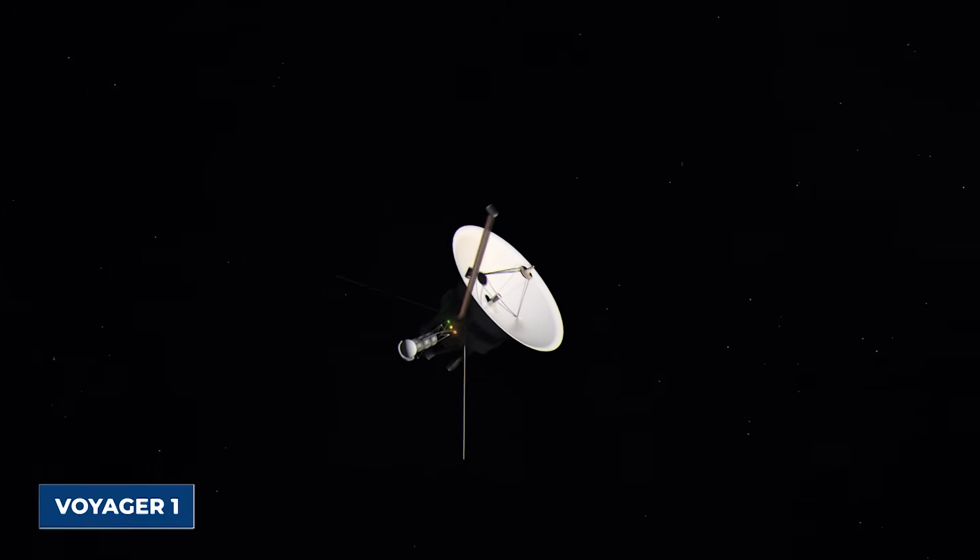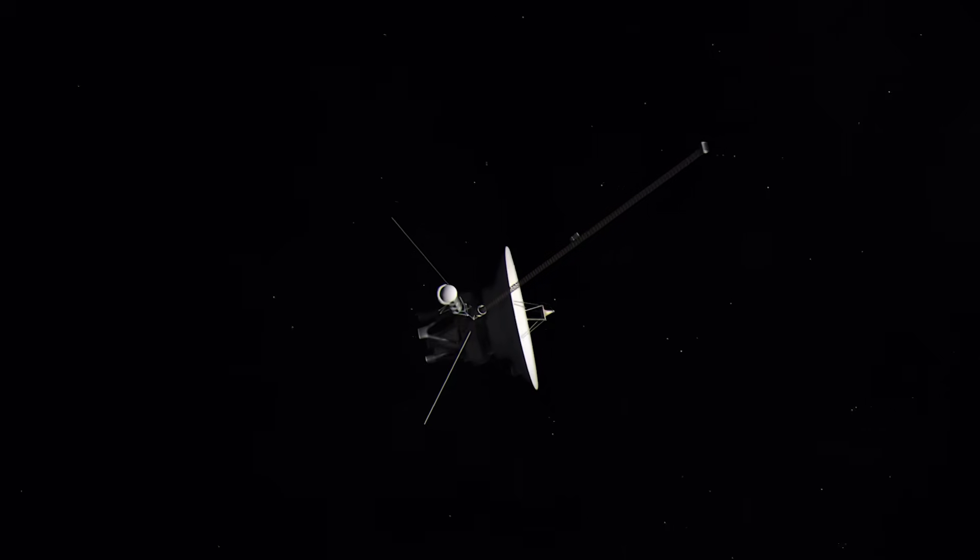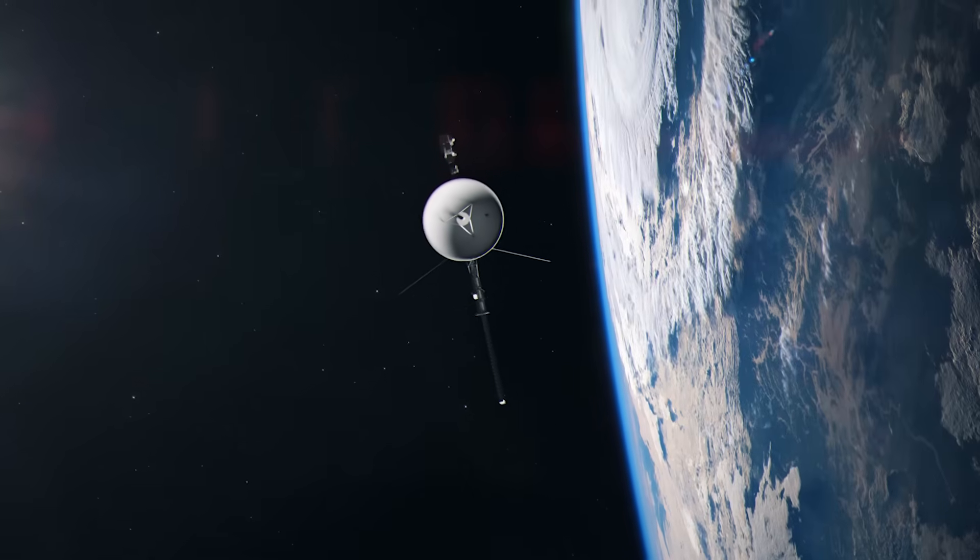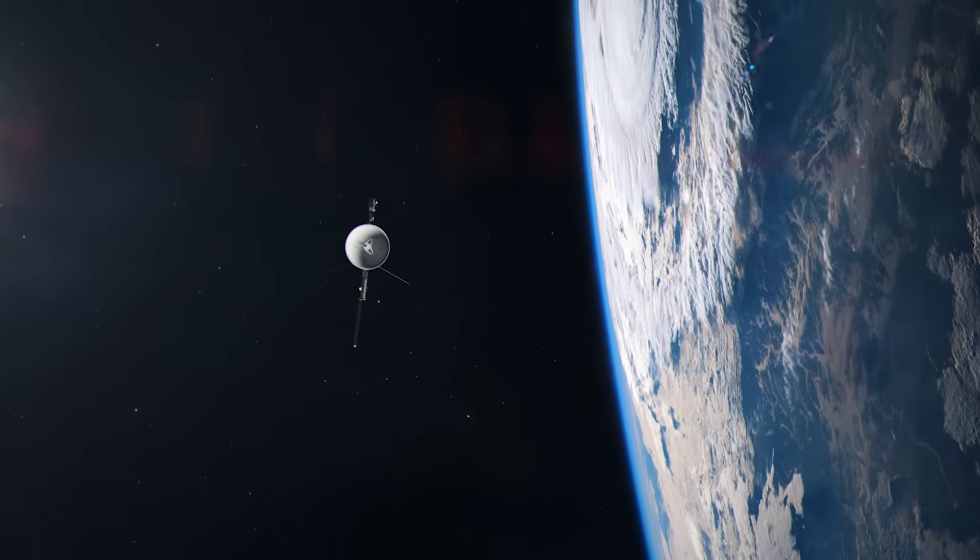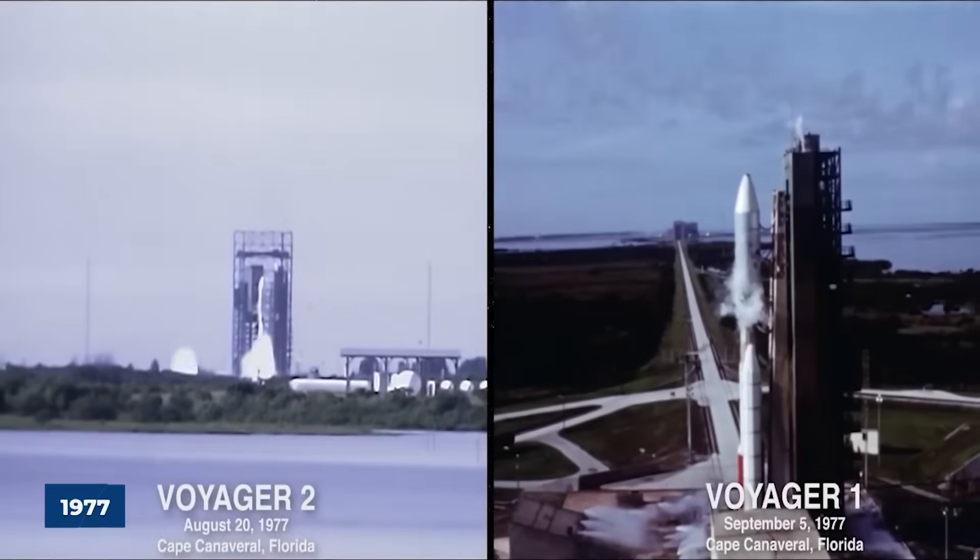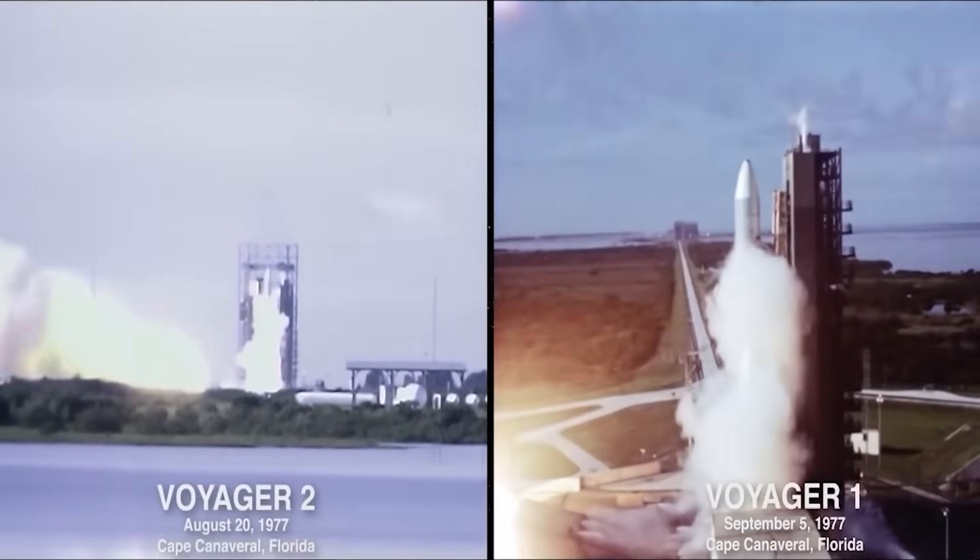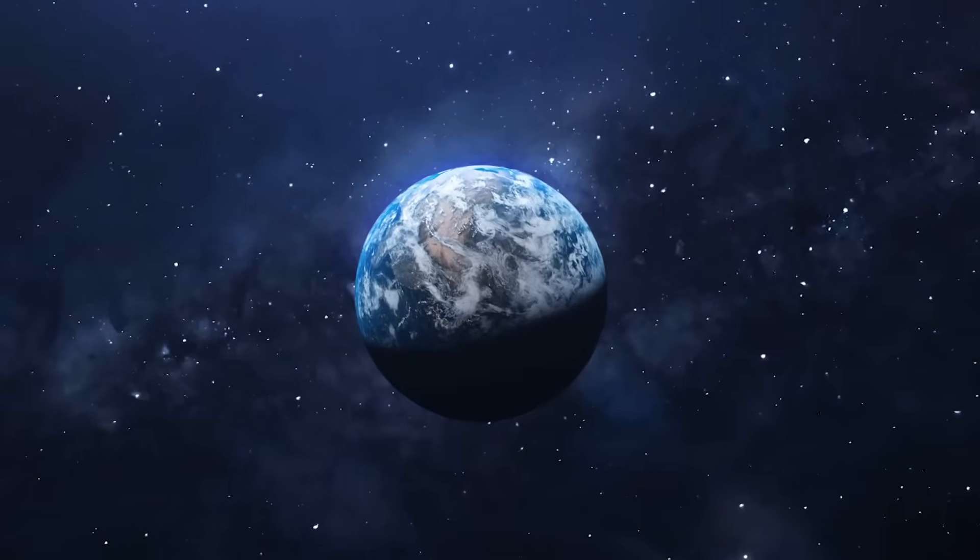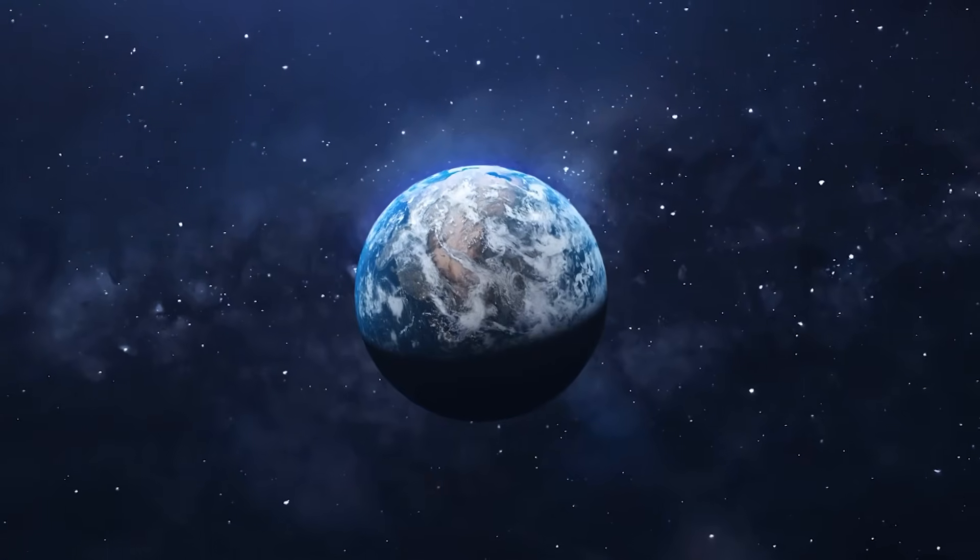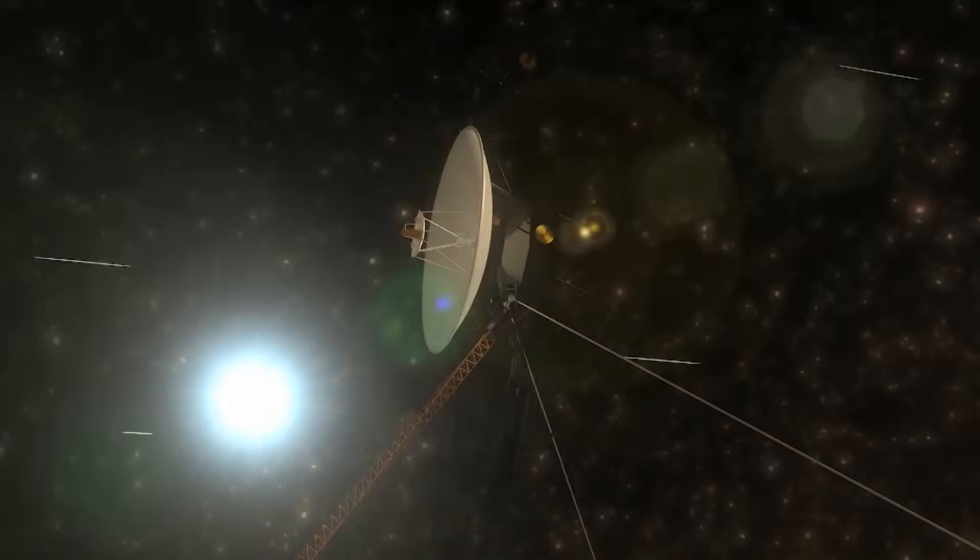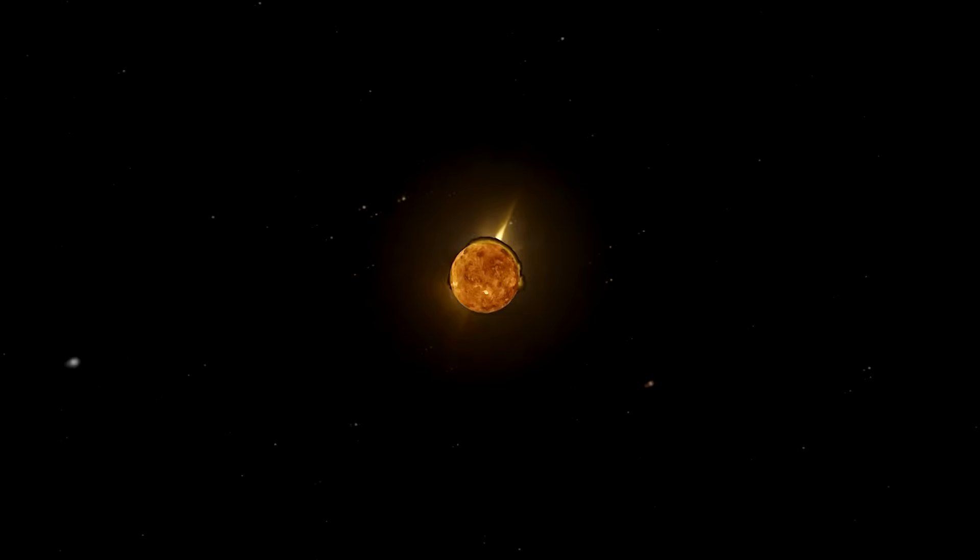For over four decades, Voyager 1 has drifted silently through the void, carrying with it the echoes of humanity's earliest dreams of reaching the stars. Launched in 1977, it was built to explore the outer planets and then to continue outward into the great cosmic ocean. Over time, the spacecraft surpassed all expectations, becoming the most distant human-made object from Earth.